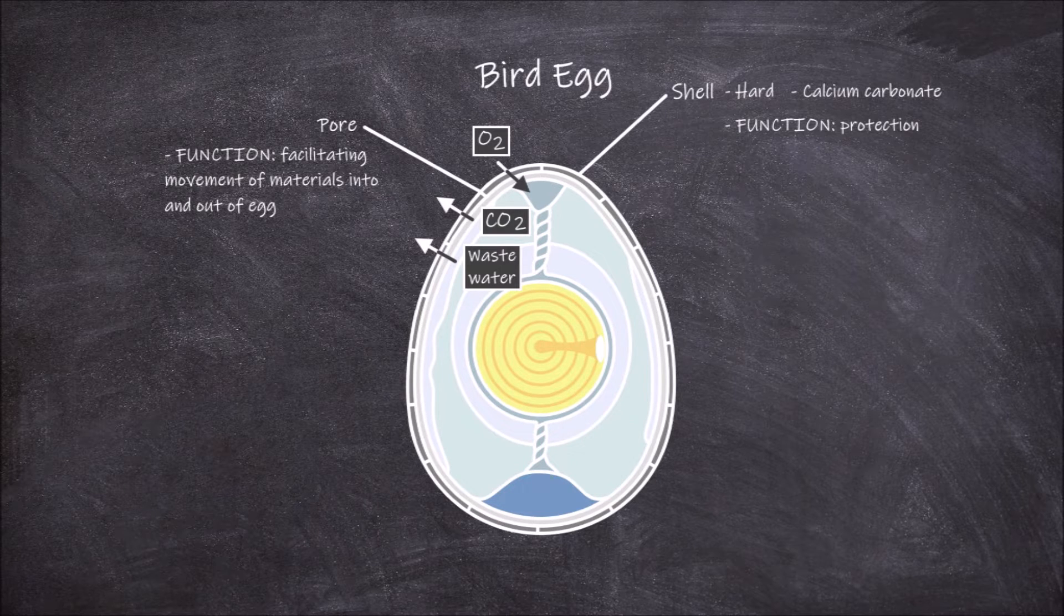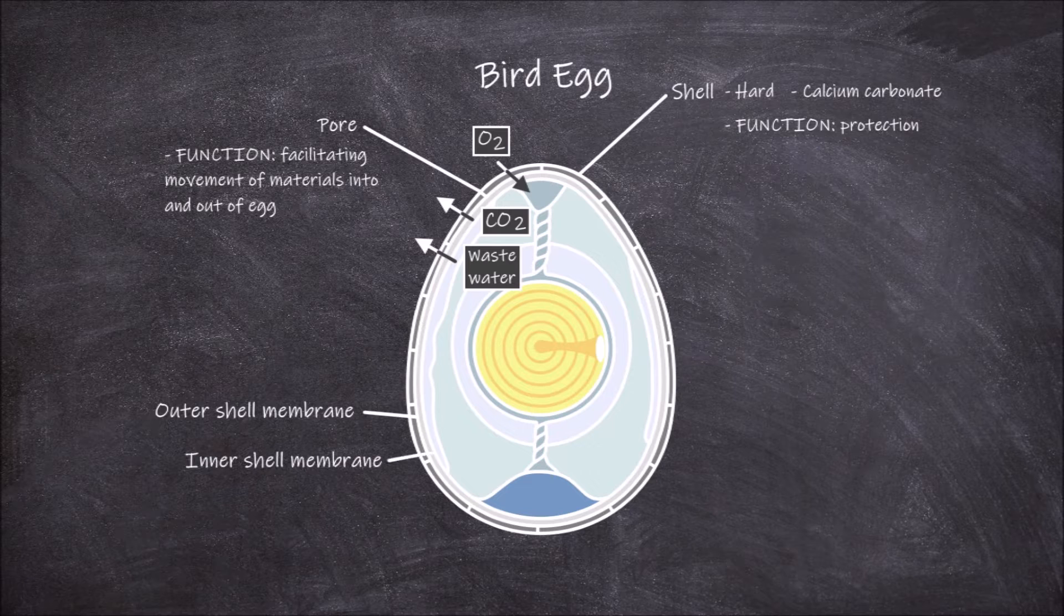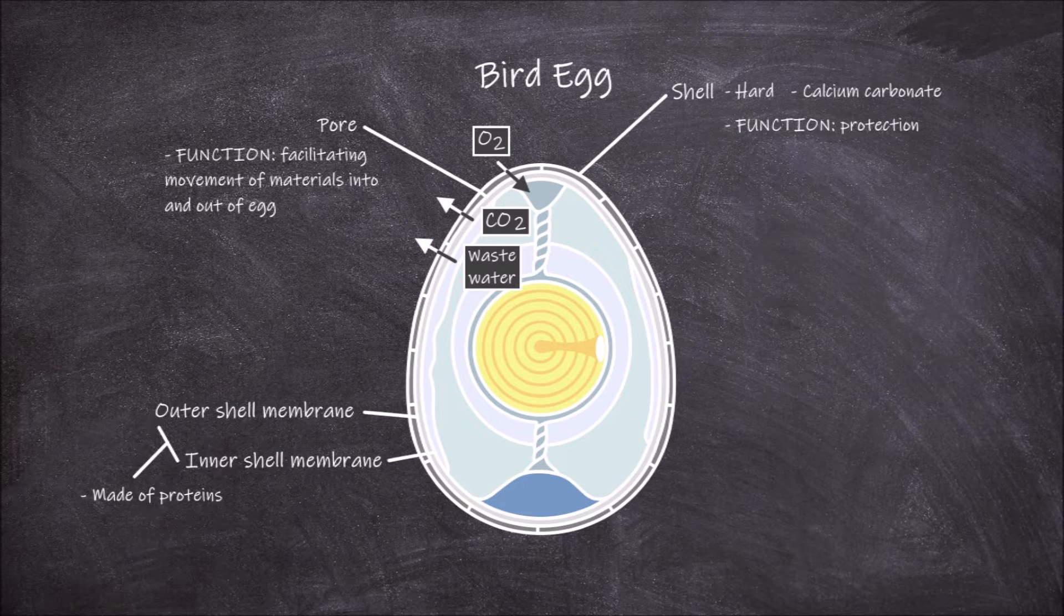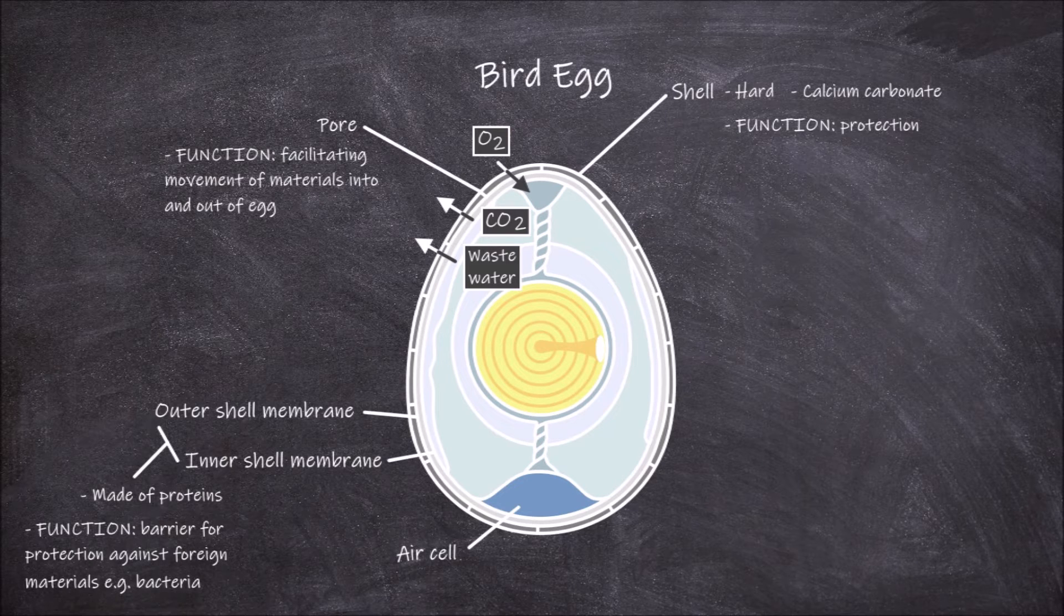Beneath the shell are the shell membranes. There are two shell membranes: the outer shell membrane and the inner shell membrane. These membranes are thin films made primarily of protein. The outer shell membrane sticks tightly to the inside of the shell. The inner shell membrane separates from the outer shell membrane at the blunt end of the egg, forming an airspace known as the air cell. The function of these shell membranes is as a barrier for protection against foreign materials such as bacteria from entering the egg.